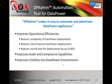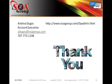In closing, DP Admin for automation allows you to improve your operational efficiencies, reduces your complexity, reduces your risk of manual DataPower deployments, and reduces your overall time for deployments by up to 80%. It improves your audit and compliance capabilities and your visibility into your DataPower environments. I'd like to thank you for joining us for this presentation today. You can give us a call to schedule a demo at 707-773-1198, or you can email me at adugas@isoagroup.com. You can also go to our website for more information at isoagroup.com/dpadmin.html. Thank you.